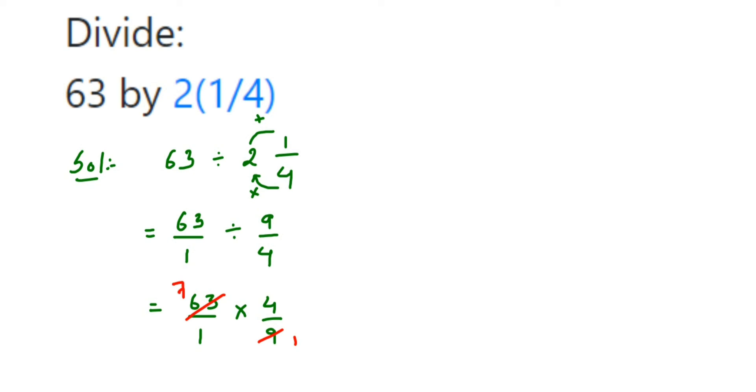So multiply the numbers in the numerator—we have 7 and 4. 7 times 4 is 28, so we'll get 28. In the denominator we have only 1 left, so 1 times 1 is 1. You can just leave it like that. So the answer is 28. This is a simple question, can come for one mark.